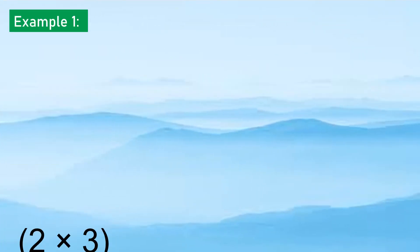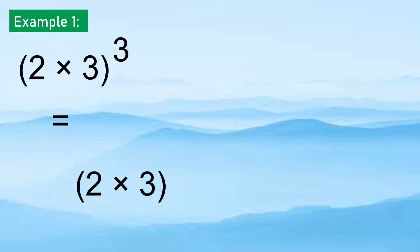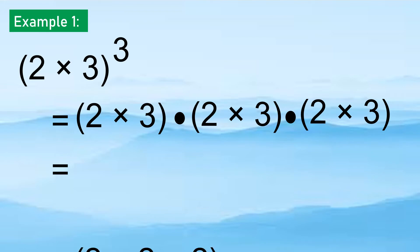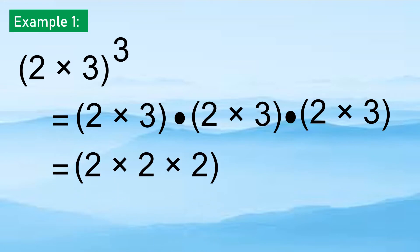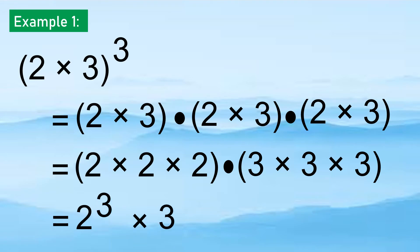Example 1: (2 times 3) raised to the 3rd power — we multiply it 3 times by itself, combine like terms, and the final answer is 2 to the 3rd times 3 to the 3rd.